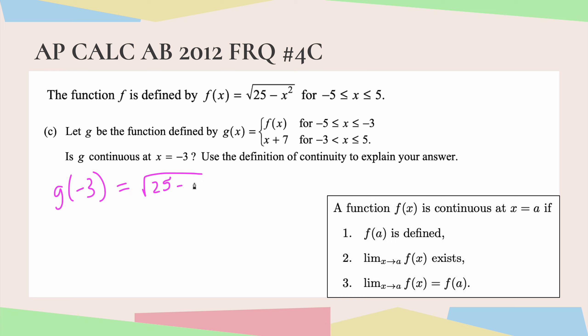Which is 25 minus our x squared, and all of that should be under the root symbol. Negative 3 squared is 9, and then 25 minus 9 is 16, and the square root of 16 is equal to 4. Good.